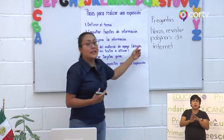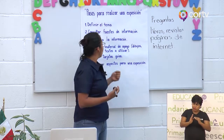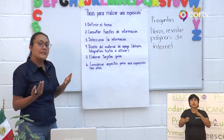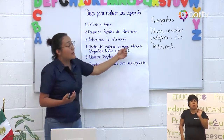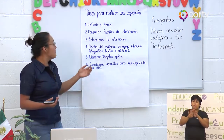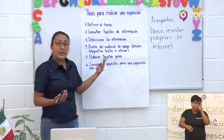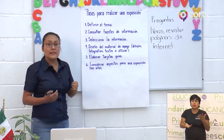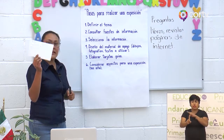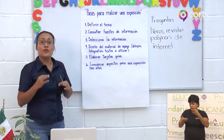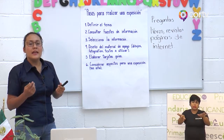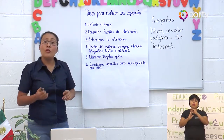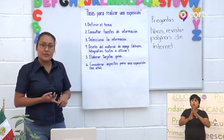Vamos a ver el diseño de material de apoyo. Para exponer un tema, tenemos una variedad de instrumentos que podemos utilizar: pueden ser dibujos, y ahí te puedes ayudar de algunos mapas mentales; pueden ser también fotografías, textos o láminas. Vamos también a hacer uso de tarjetas guías, las cuales pueden llevar información precisa de lo que tú quieres expresar. Considerar aspectos para una exposición en voz alta: el tono de voz, la fluidez, la entonación.